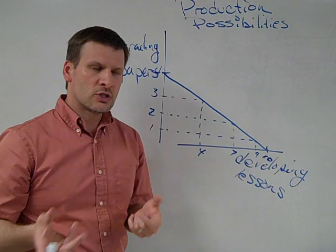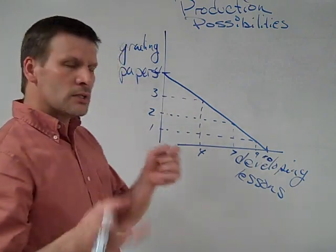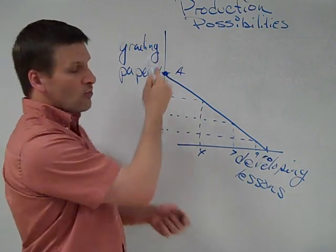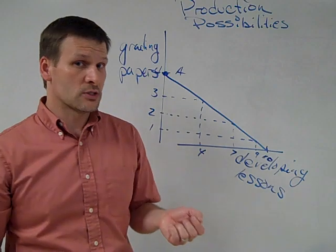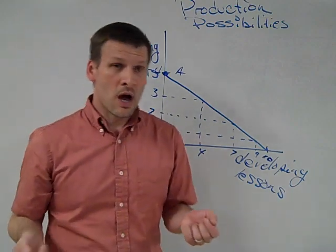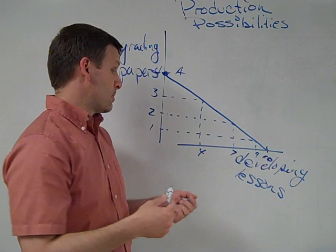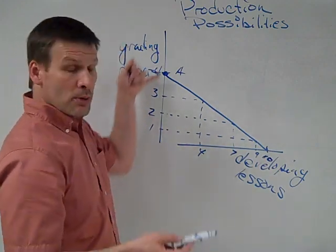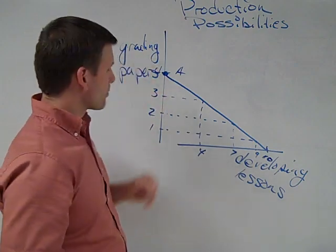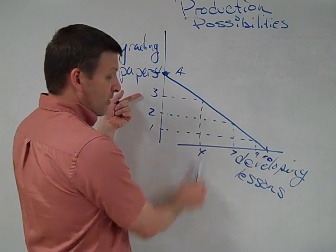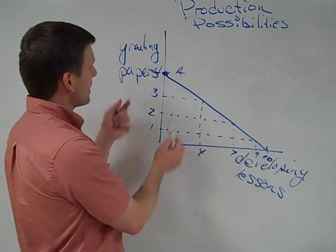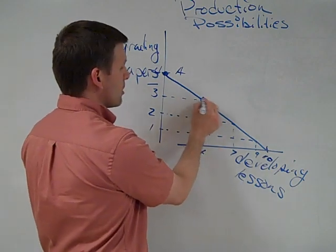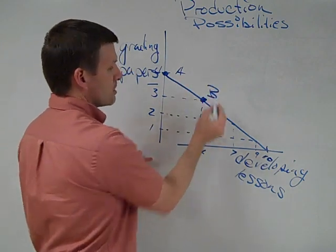So how does this illustrate the concept of opportunity costs? Let's assume that I start out at this position here. We'll call it A, where I'm grading four papers and I'm developing no interesting lessons. And let's say that I'm not very happy with that as a teacher. I'd like to actually develop some interesting lessons. And so I make a decision. I say, right, I'm going to give up grading a paper in order to develop some lessons. In this case, if I give up a paper, I'm going to be able to develop four lessons. So I move over on this curve to position B.